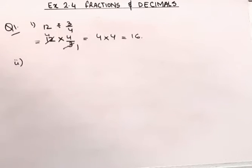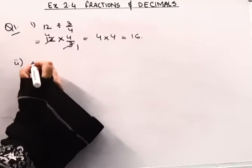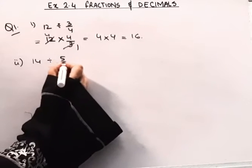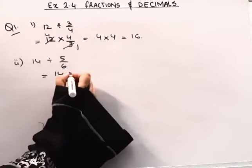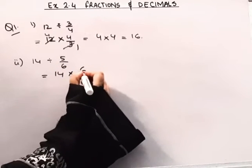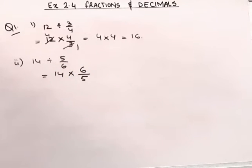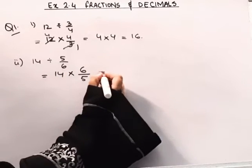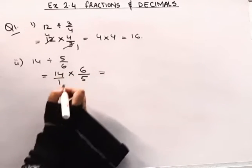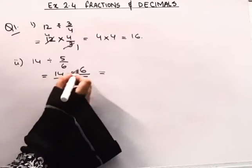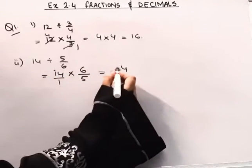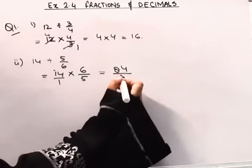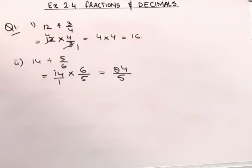Now coming to the second part. This is 14 divided by 5 by 6. This division will change to multiplication and it will be reciprocal — this will become 6 by 5. Numerator multiplied by numerator, denominator by denominator. 6 fours are 24, 6 ones are 6, giving 84. So the answer to the second part is 84 by 5.